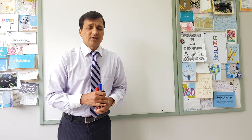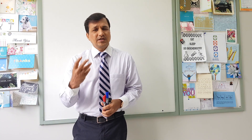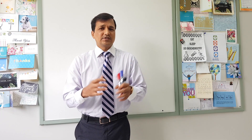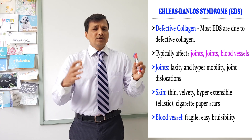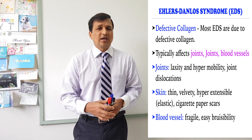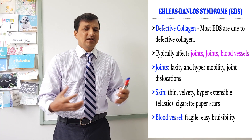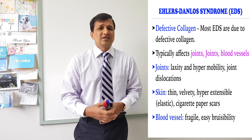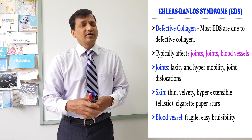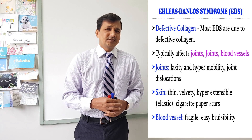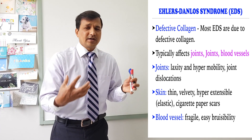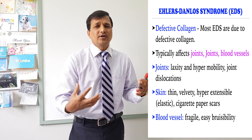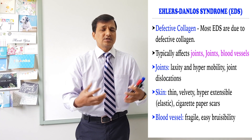In vascular Ehlers-Danlos syndrome, type 3 collagen is mutated. The signs and symptoms of EDS affect three systems: joints, skin, and blood vessels. Patients with EDS have hypermobile or hyperelastic joints — they can flex and bend their joints in abnormal ways. Because of joint laxity, there is a risk of repeated dislocations, and EDS patients often learn to reduce their own dislocations due to the frequency of occurrence.